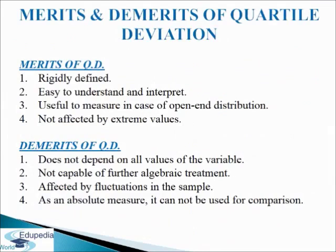Now we come to merits and demerits of quartile deviation. First we will discuss merits. It is rigidly defined. It is very easy to understand and interpret. Next, it is very useful to measure in case of open-end distribution. And it is not affected by extreme values. There are some demerits also. First, it does not depend on all values of the variable, as it ignores the first 25% and the last 25% of the items. Thus it cannot be regarded as a reliable measure of variability.